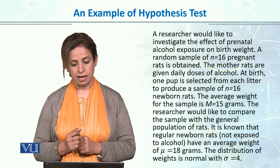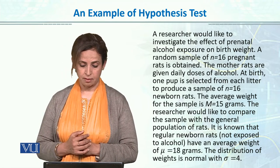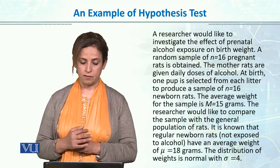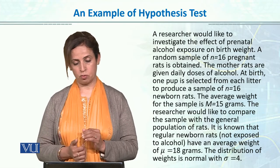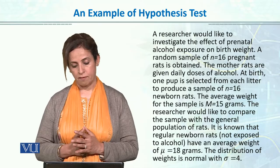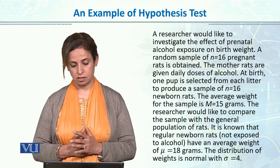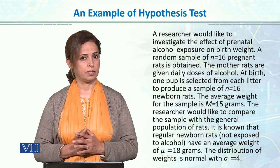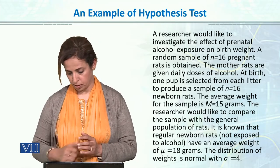Newborn rats. The average weight for the sample is 15 grams and the researcher would like to compare the sample with the general population of rats. It is known that the regular newborn rats not exposed to alcohol have an average weight of mu equal to 18, with the distribution of weights being normal with standard deviation sigma equal to 4. So a lot of information is given in this one example.